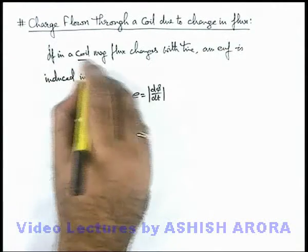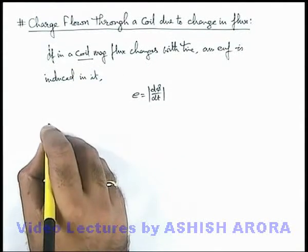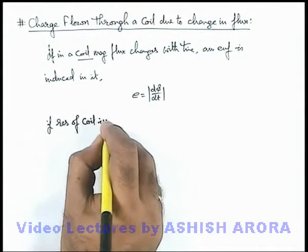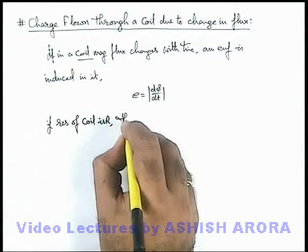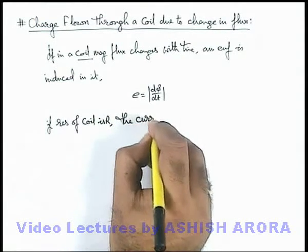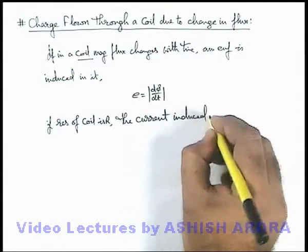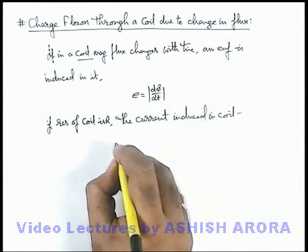Now if the coil is a closed loop, and if resistance of coil is R, we can say that the current induced in coil can be given as